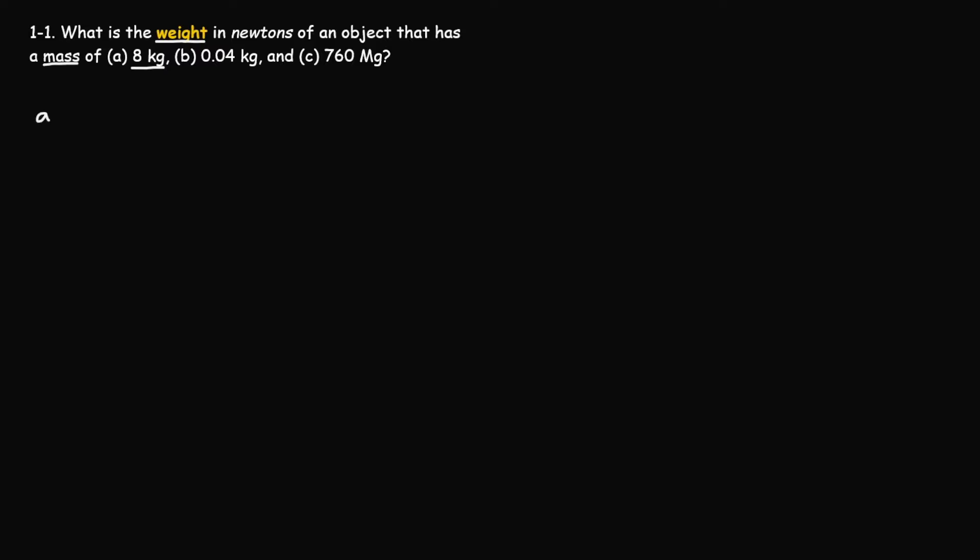Starting off with part A, in order to find the weight, we need to use the equation W = mg, which states that the weight W is equal to mass times the acceleration due to gravity. G is equal to 9.81 meters per second squared, and in this question, mass is 8 kilograms.